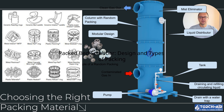So how do you know which packing is right for your scrubber? It all depends on the type of gas you're treating, the contaminants involved, and the level of efficiency you need. For simple applications, if you're dealing with straightforward processes and don't need super high efficiency, Raschig rings or Pall rings can get the job done. They're reliable, cost-effective, and easy to maintain.